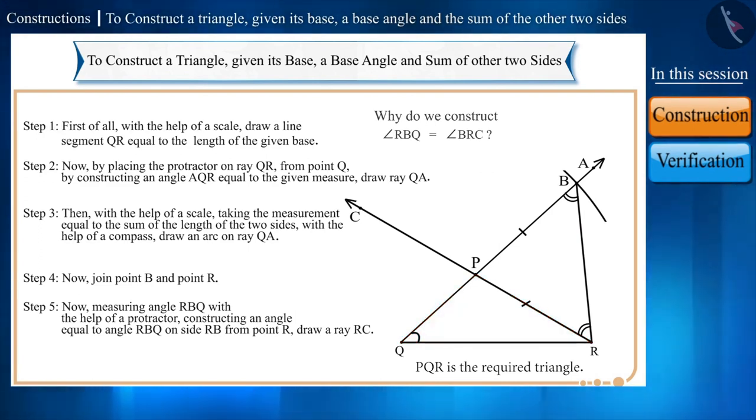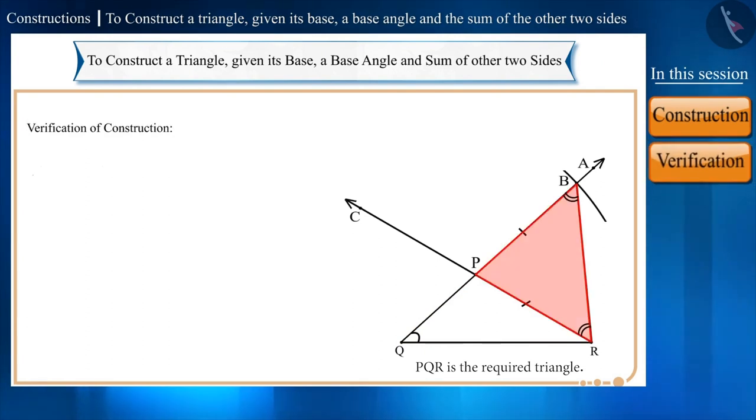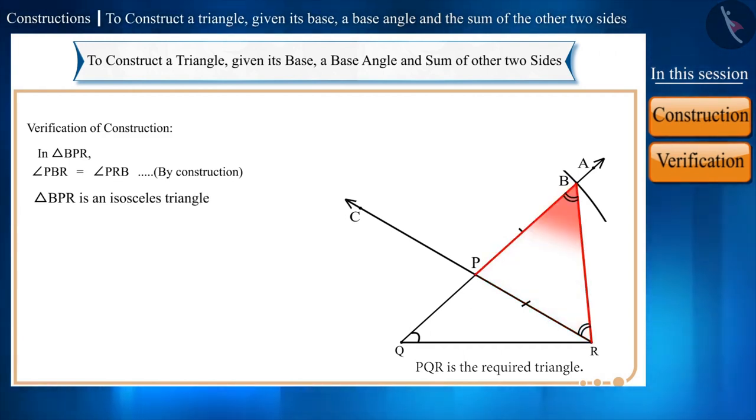Now, we will verify the figure drawn. In triangle BPR, in construction, we made two equal angles, angle PBR and angle PRB. Therefore, angle PBR is equal to angle PRB. Triangle BPR is an isosceles triangle because two of its angles are equal and opposite sides of equal angles in an isosceles triangle are equal in length. So, side PR will be equal to side PB. Let's call it equation 1.